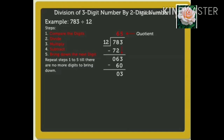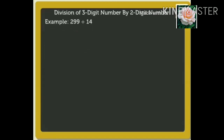Now, let us solve one more example: 299 divided by 14. Here, 2 is smaller than 14, so there are not enough hundreds. Now, compare the tens in the dividend with the divisor. Here, 29 is greater than 14, and therefore we can divide 29 by 14.